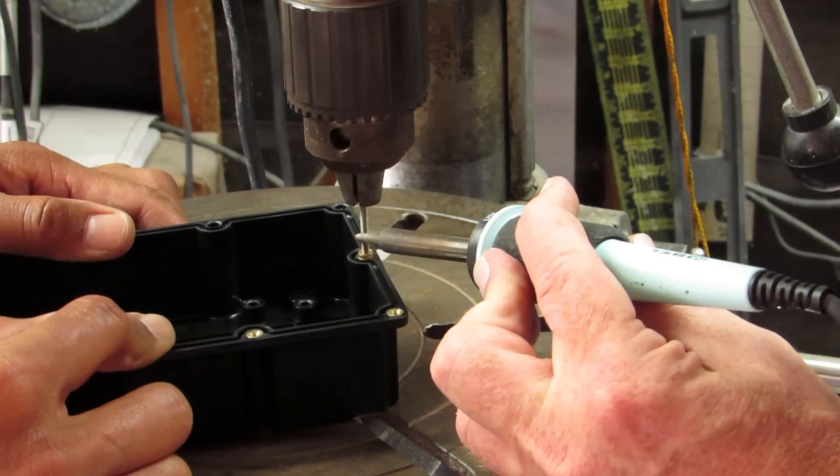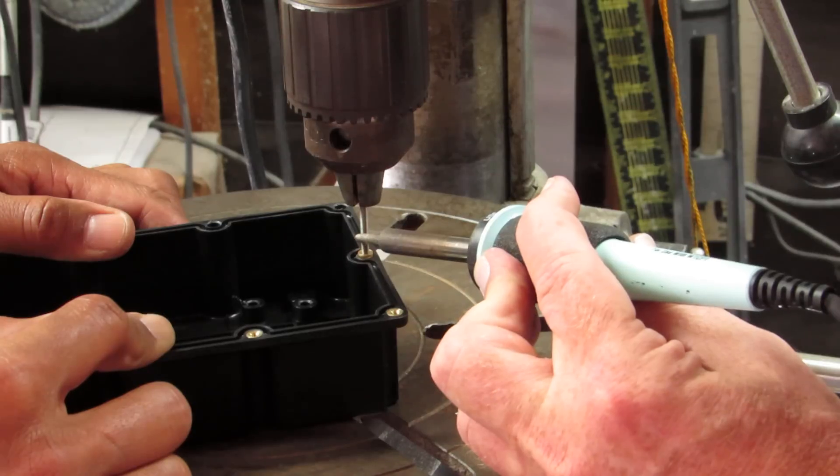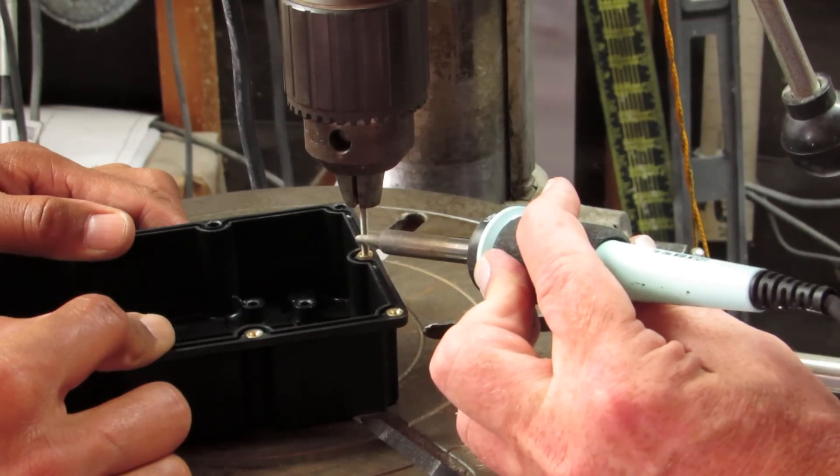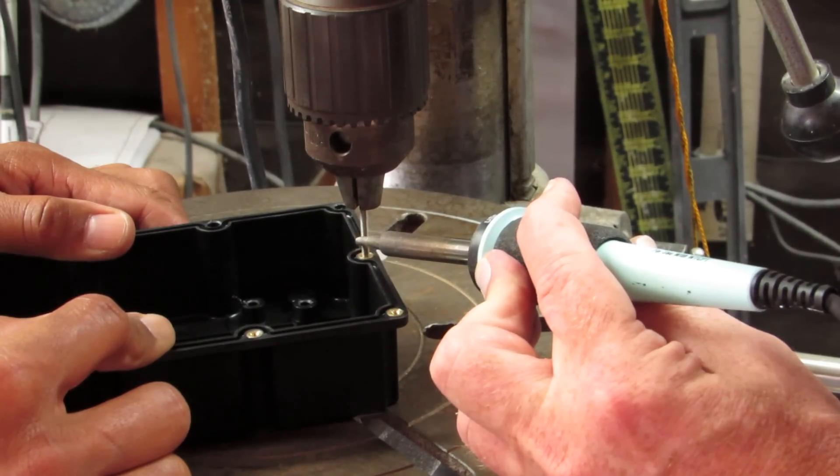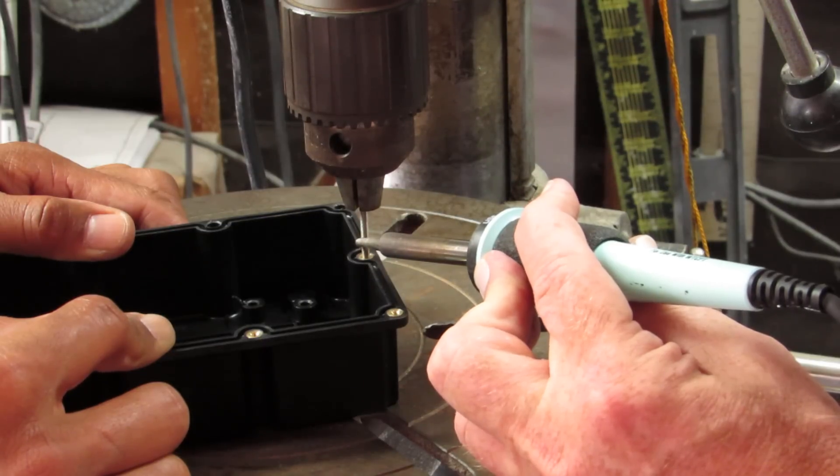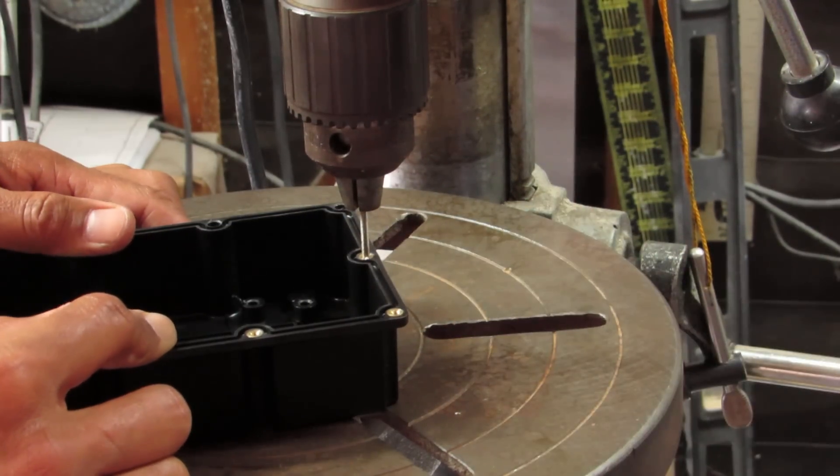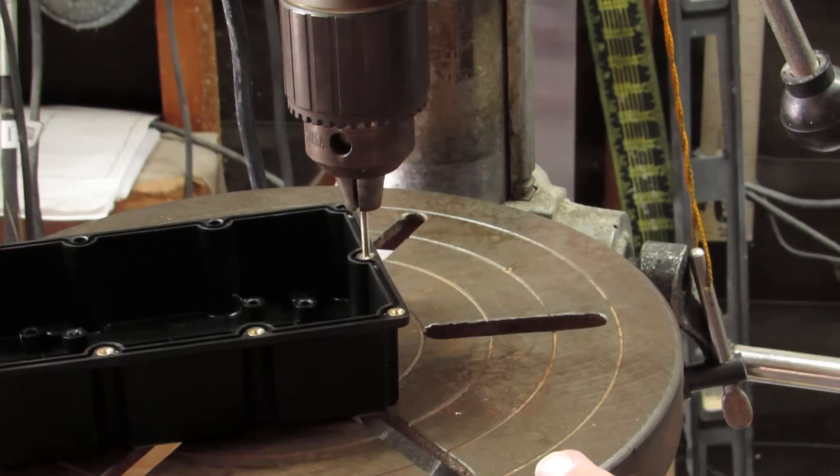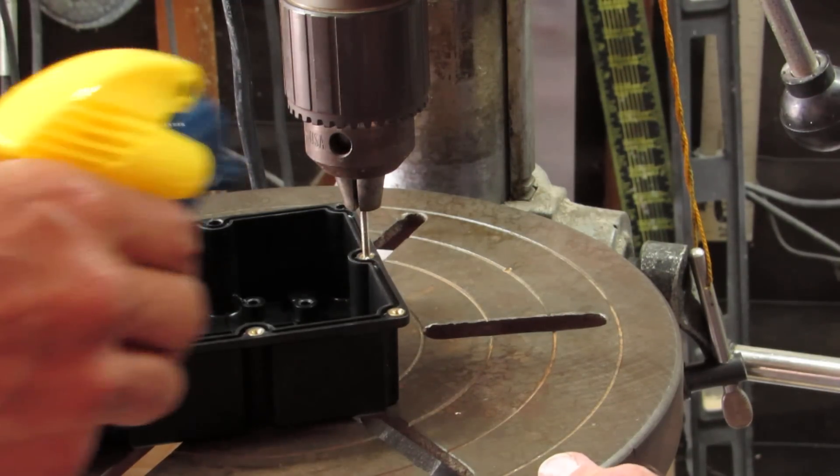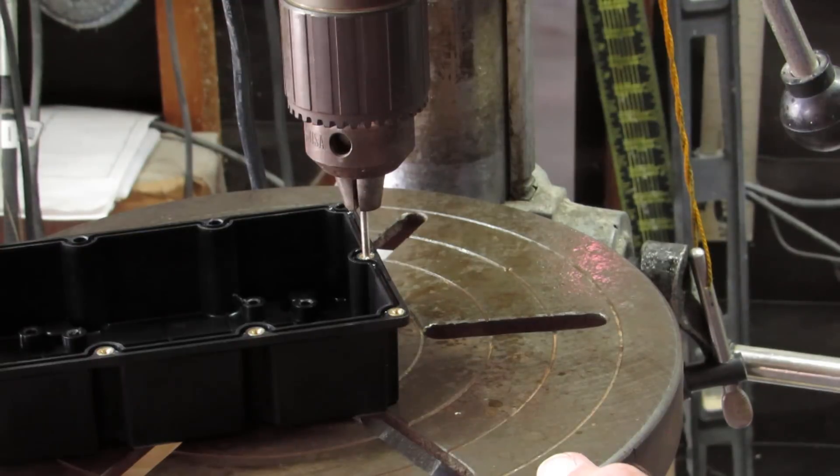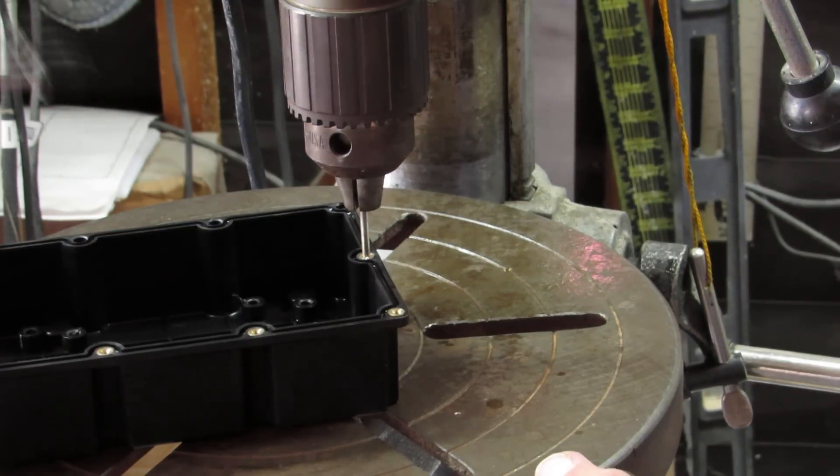And now it's got to melt more plastic in order to fill all the serrations that are in the side of the brass insert. It's starting to go down, starting to go down. And there I've hit the stops. I will remove the heat. Tom, you want to shoot it. We're going to shoot it with a little alcohol, just to cool it down quickly and blow it off with air.